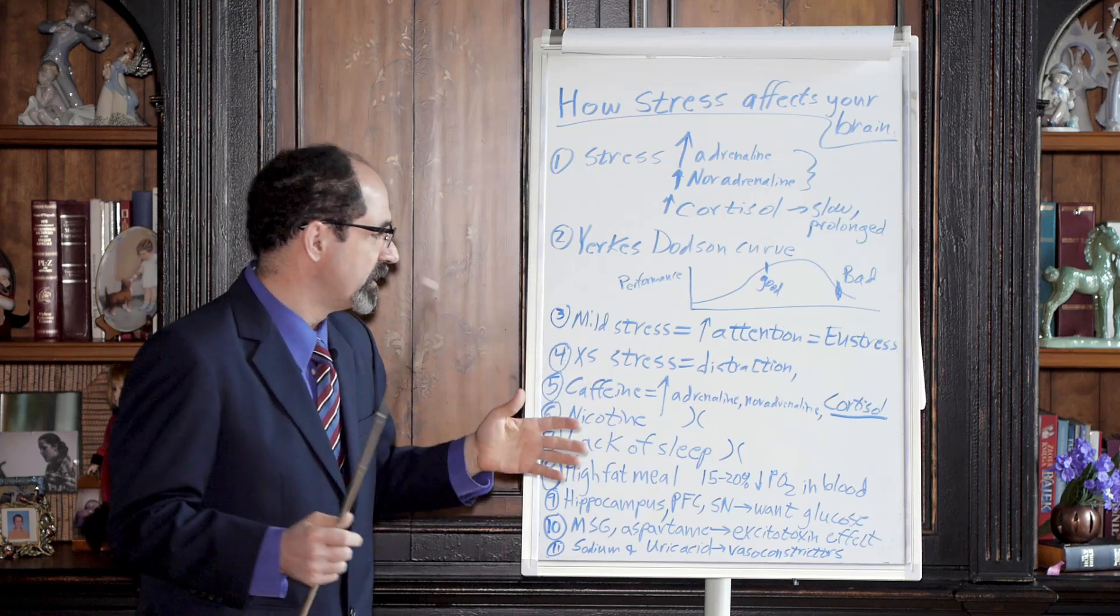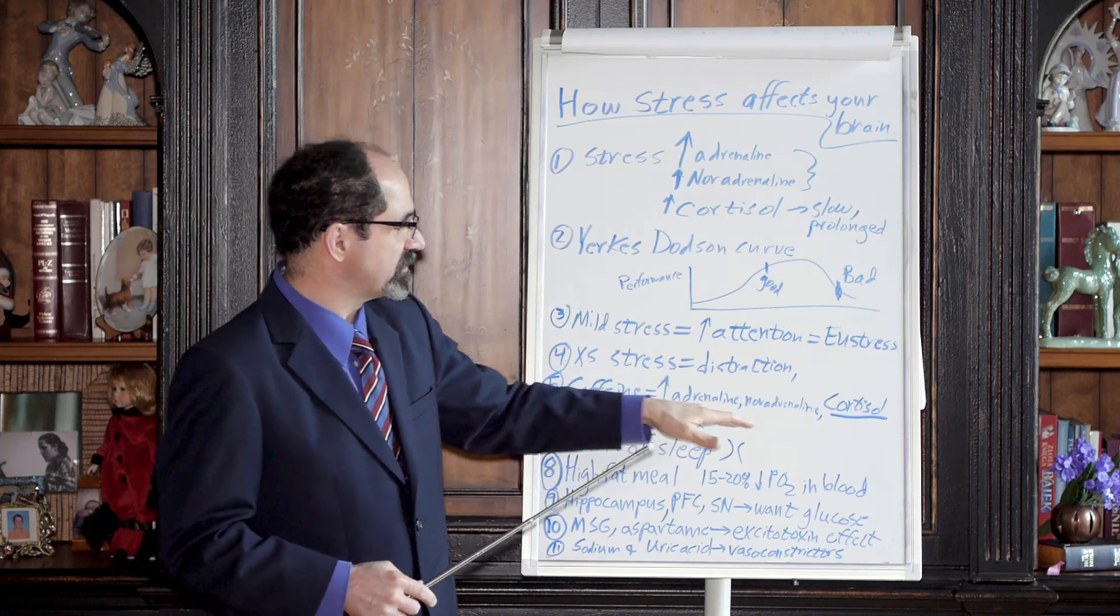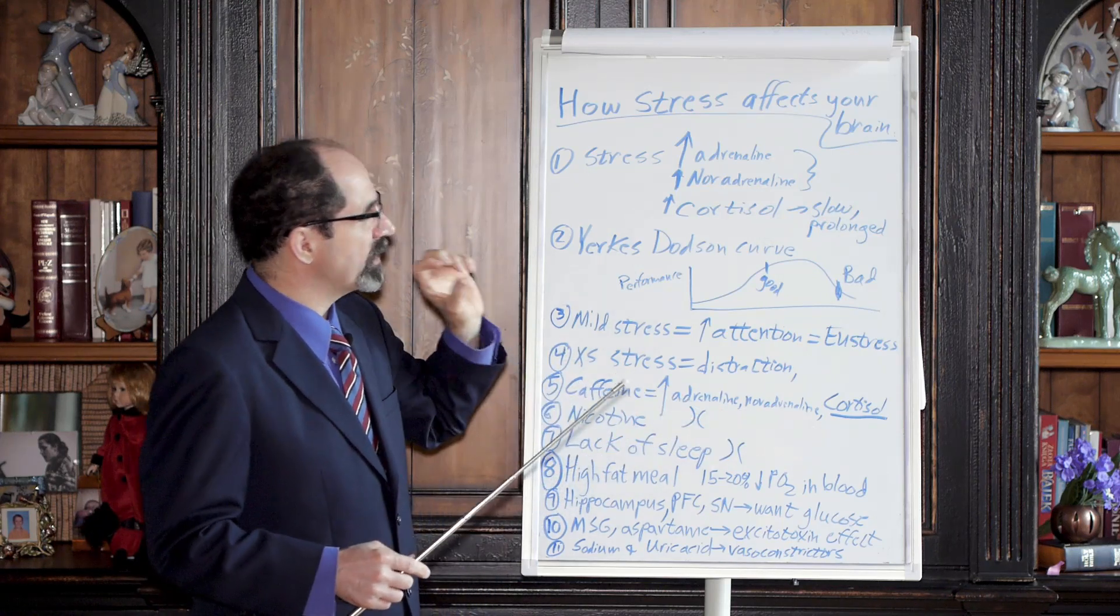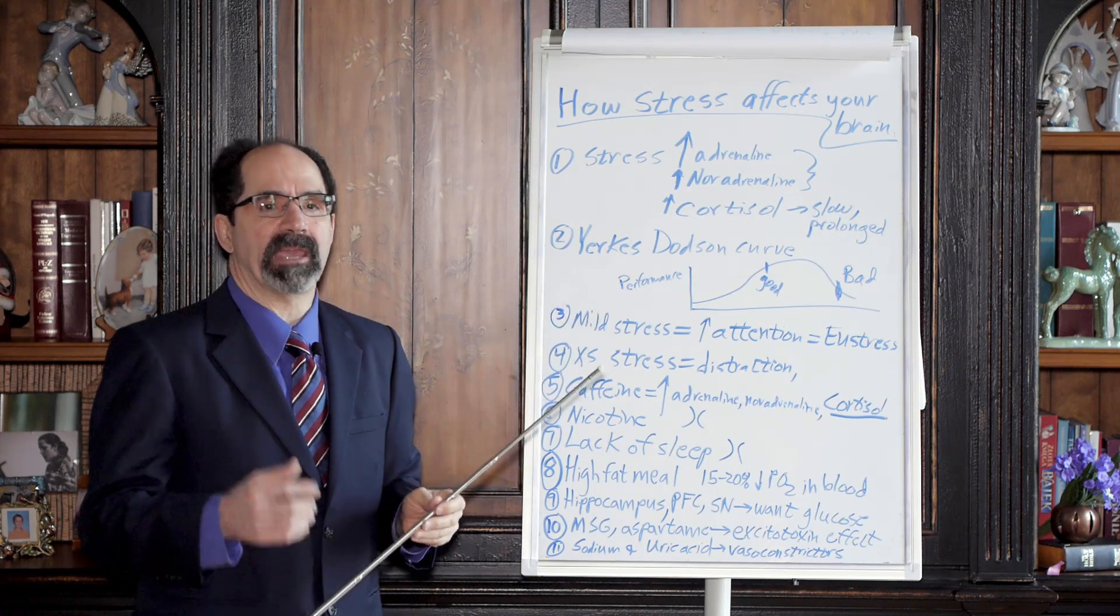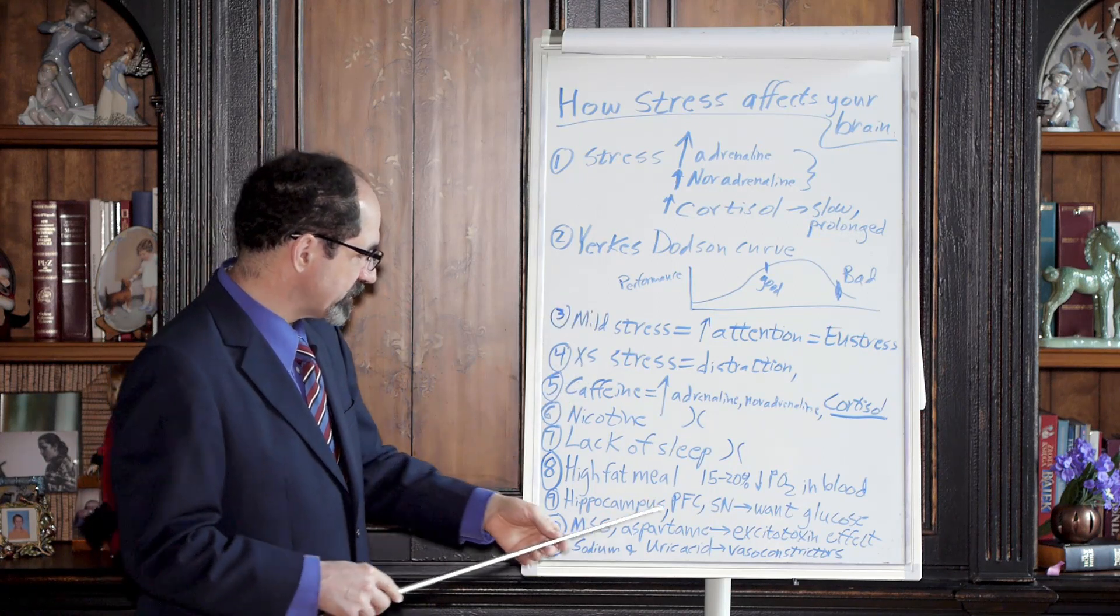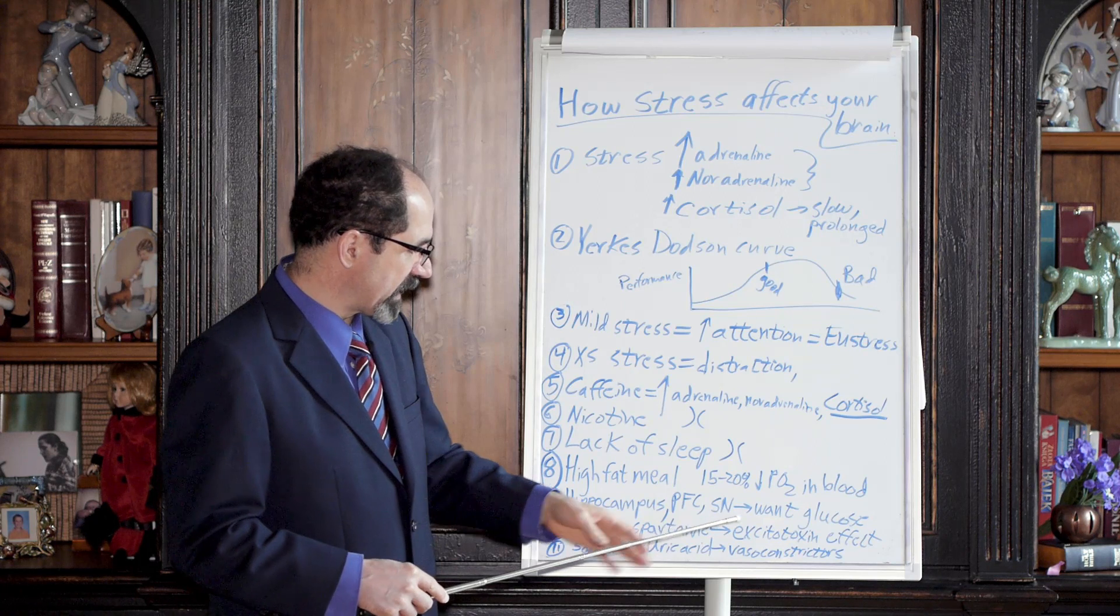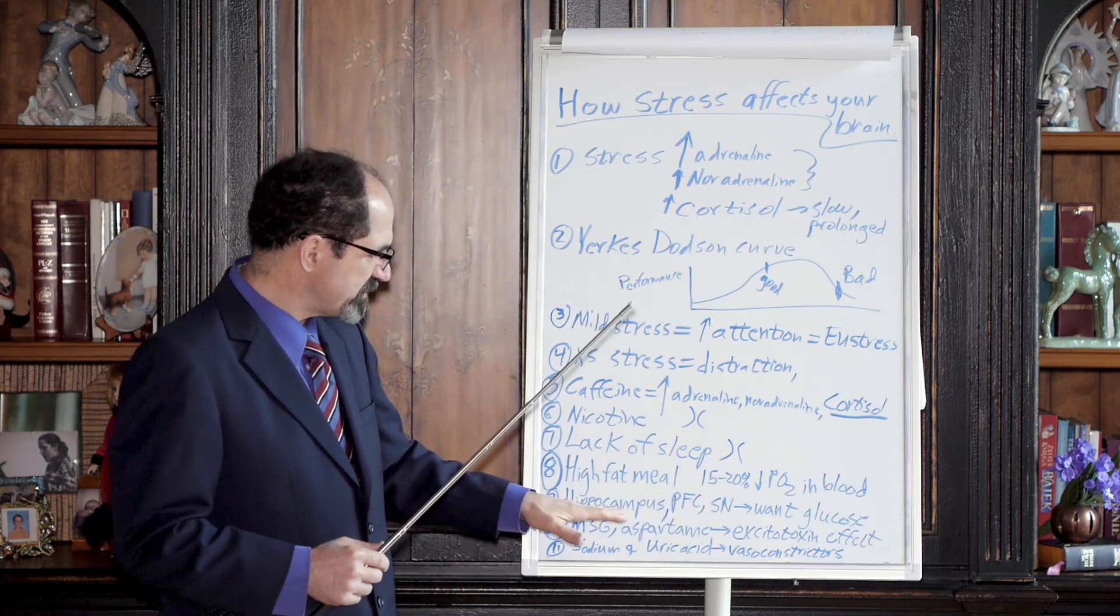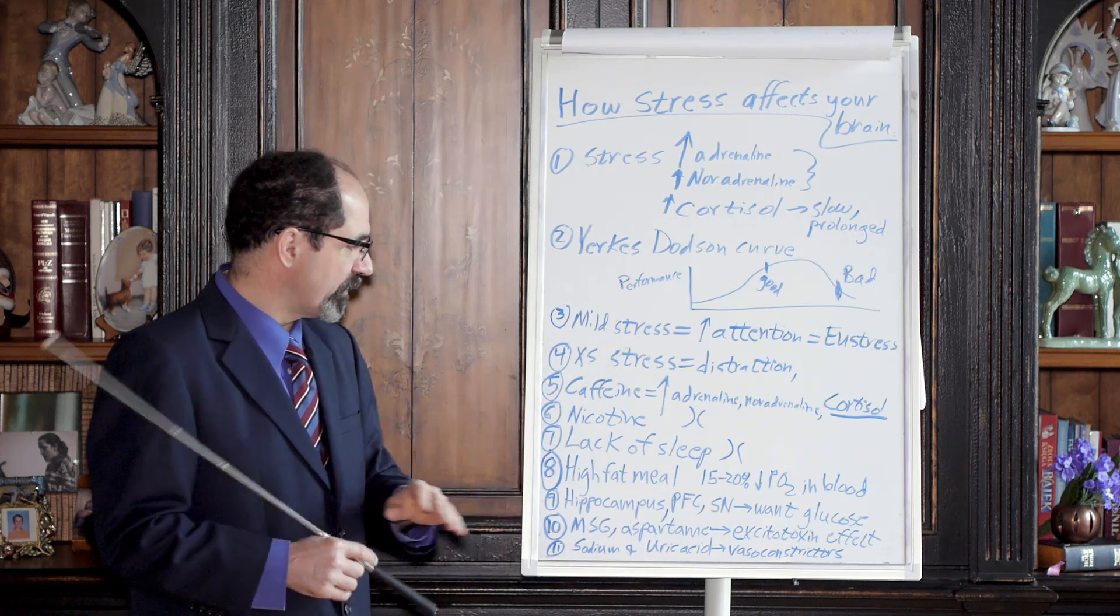Some people smoke a cigarette when they're stressed. Brilliant. You do the same thing, you increase the same hormones. And so now you're putting a much higher amount of cortisol on your hippocampus, your memory center. It also involves the PFC, prefrontal cortex, substantia nigra. And especially the hippocampus, those are our main focus here.